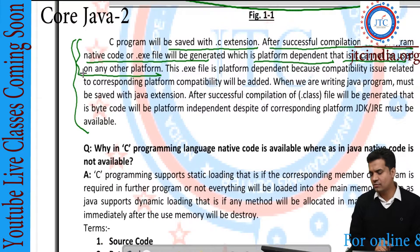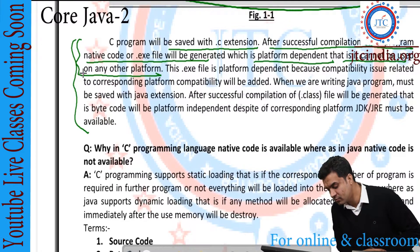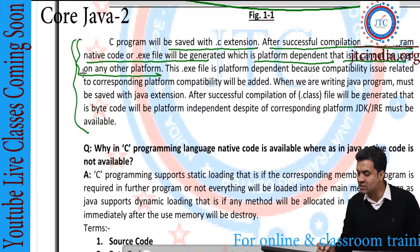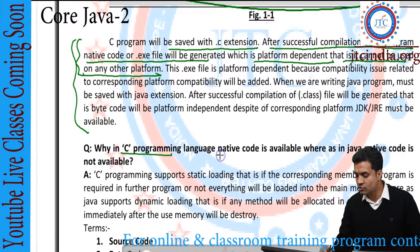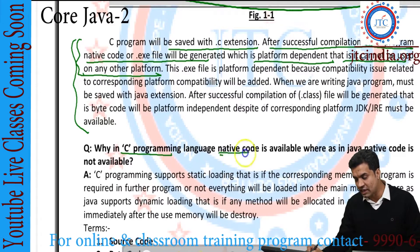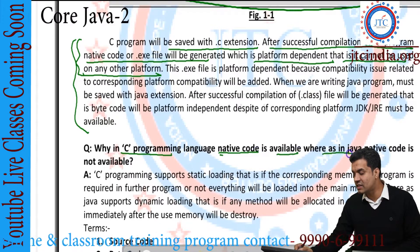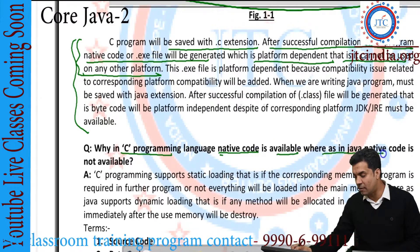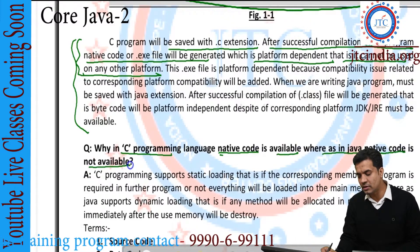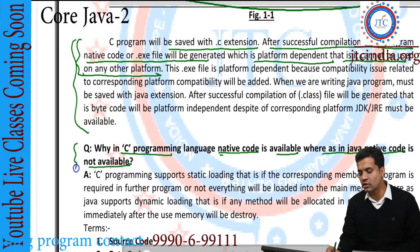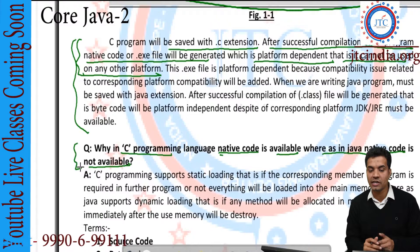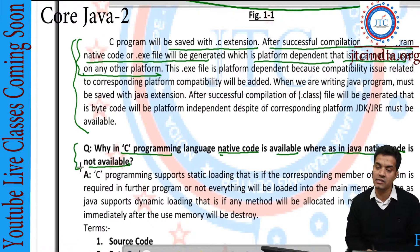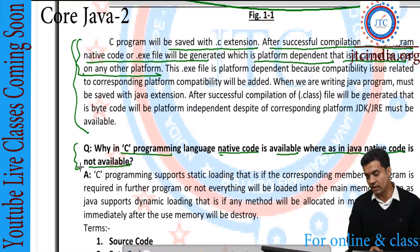I have given one important question here: Why in C programming language is native code available, whereas in the case of Java, native code is not available? That is one very important point to understand.